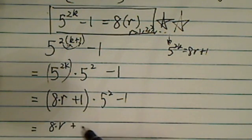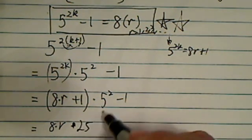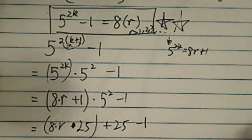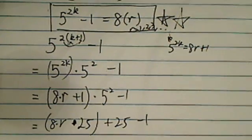8r times 25, I distributed in here, plus 25 minus 1. Let's see, I'm kind of running out of space here. Let's push the paper up a little bit.